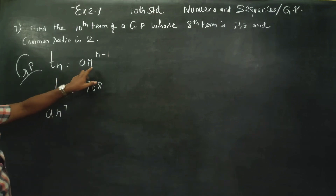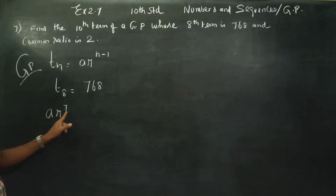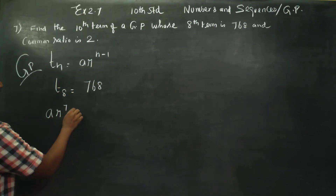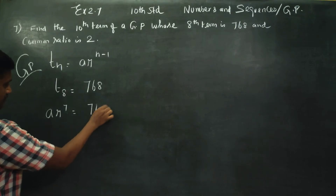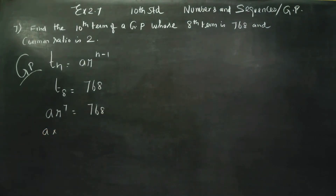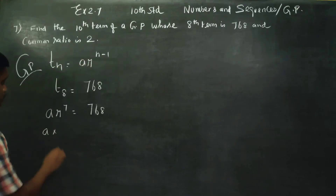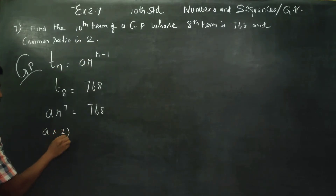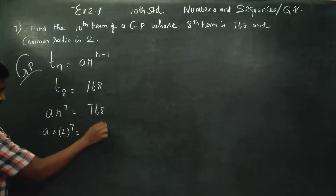From the equation Ar^7 = 768, we find the value of A by substituting the common ratio. The common ratio r is equal to 2. So with r = 2, we have A into 2^7 = 768.